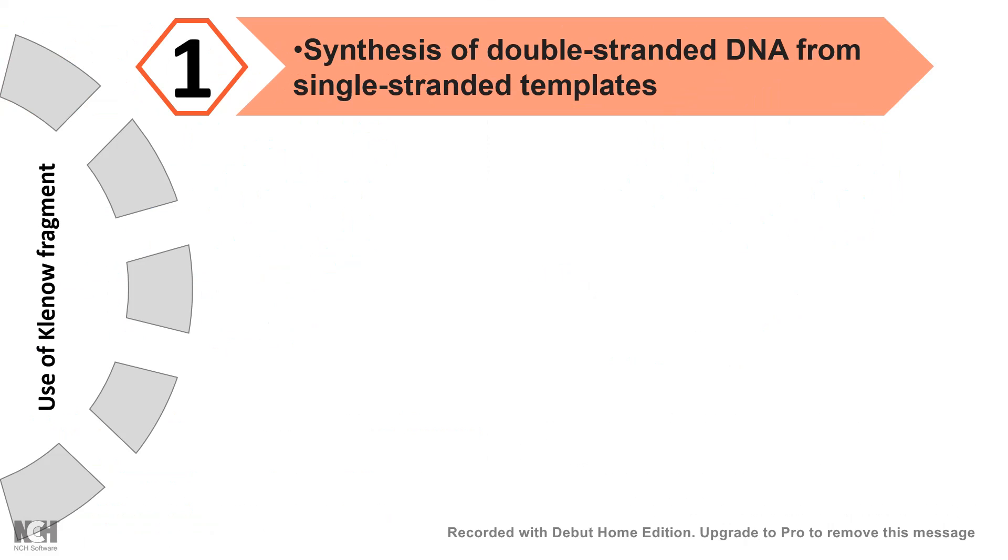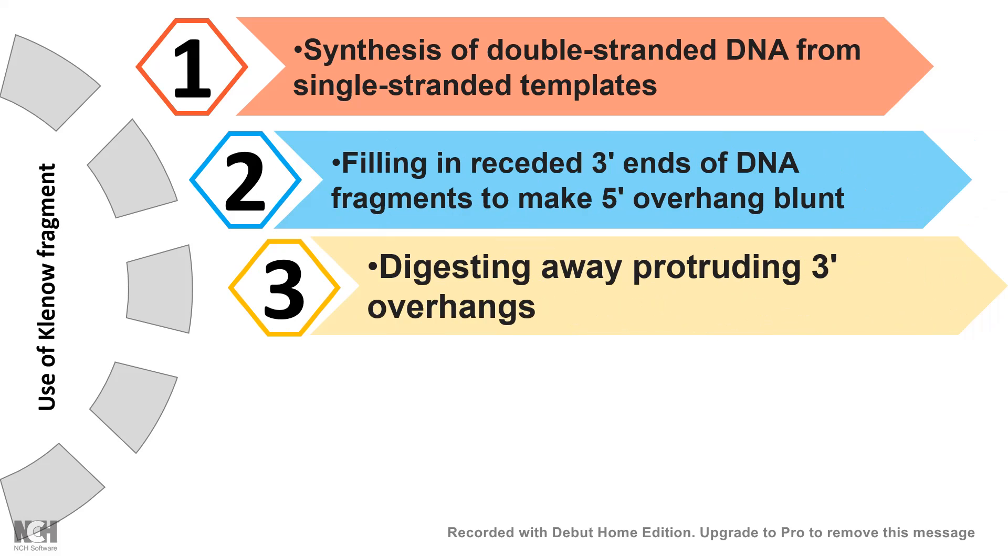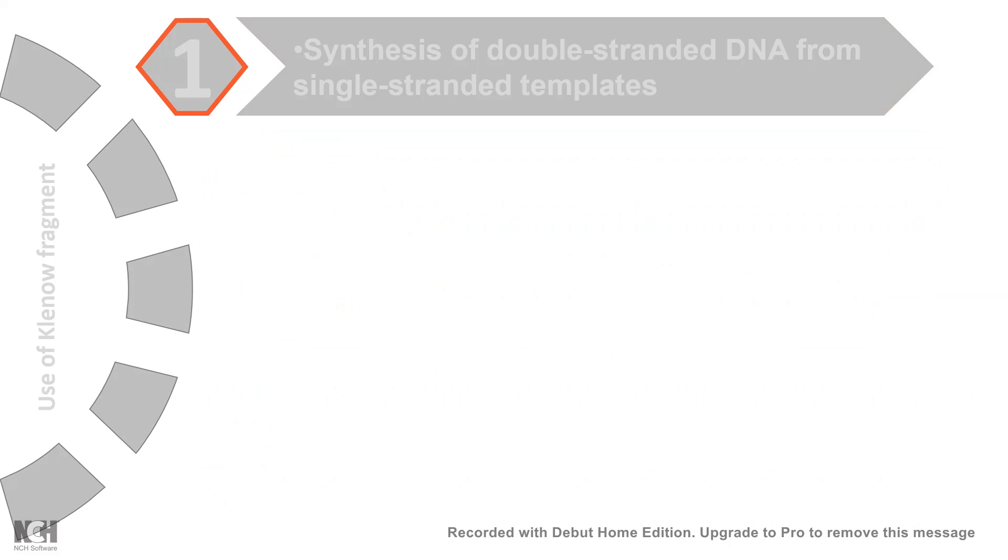So among many other usages, the principal usage of Klenow fragment is synthesizing double-stranded DNA from single-stranded templates. It's specially used in blunt end clonings, so filling the 5' and 3' overhangs is one of the important uses. Creating labeled radioactive probes is another important use, and there are multiple other different uses of Klenow fragment.